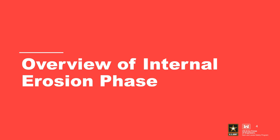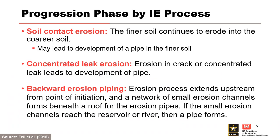Starting with an overview. Progression is the third phase of internal erosion. For soil contact erosion, erosion of the finer soil into the coarser soil continues and may lead to the development of a pipe in the adjacent soil. For concentrated leak erosion, erosion in a crack or concentrated leak leads to the development of a pipe. For backward erosion piping, the erosion process extends upstream from the point of initiation, and a network of small erosion channels form beneath a roof for the erosion pipes. If the small erosion channels reach the reservoir or river, then a pipe forms.